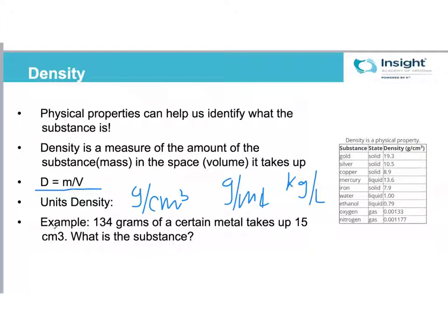Example problem we have here is, so we have the definition of density, here's the equation for it. Your units for density are just going to combine whatever your mass and volume units were. So it might be grams per centimeter cubed, it might be grams per milliliter, it might be kilograms per liter, something like that. Whatever your units are that you start with in mass and volume, those combine to make your units for density. So one thing, this should be a superscripted 3, but apparently this program doesn't keep that. But I've got 134 grams of a certain metal that takes up 15 centimeters cubed. What is the substance?